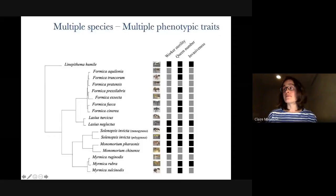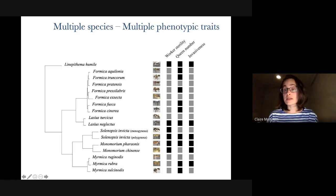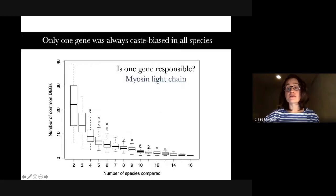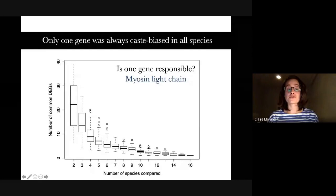We had caste — queen and worker — as the phenotype of interest. But these multiple ant species also display other phenotypes, like worker sterility for some, or the ability to have multiple queens in the nest, or even invasive nests. So we had this major dataset, which was really big. The first thing we did, like anybody would, was to look for genes that were differentially expressed between the queens and the workers, individually for each species.